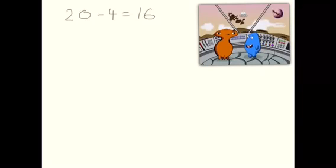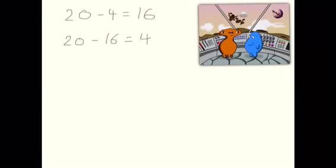So, one way of rewriting 20 take away 4 equals 16 is simply by changing it to 20 take away 16 equals 4. Well done, but we've not used the inverse yet.